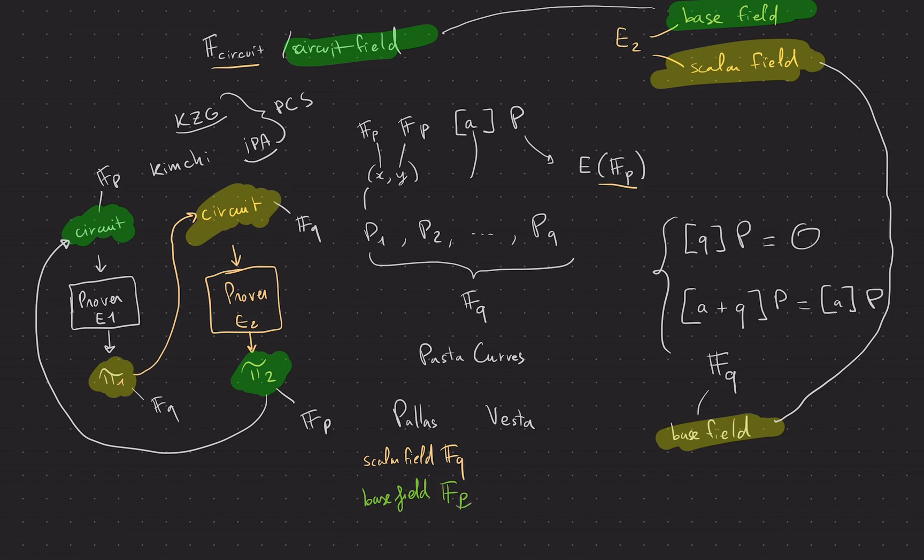And Pallas has the scalar field of Pallas is Fq, and the base field of Pallas is Fp. And usually I remember it because P is like pass. And so the other way around, in Vesta you have a scalar field of Fp and the base field is Fq.